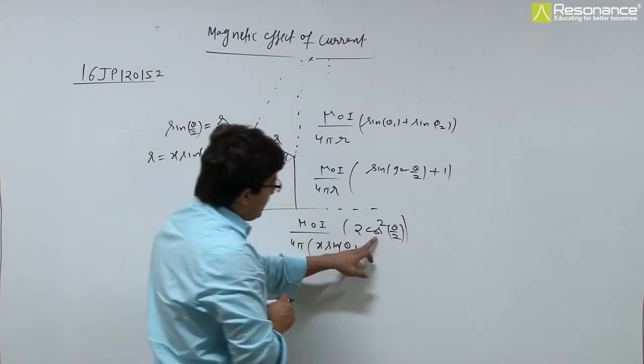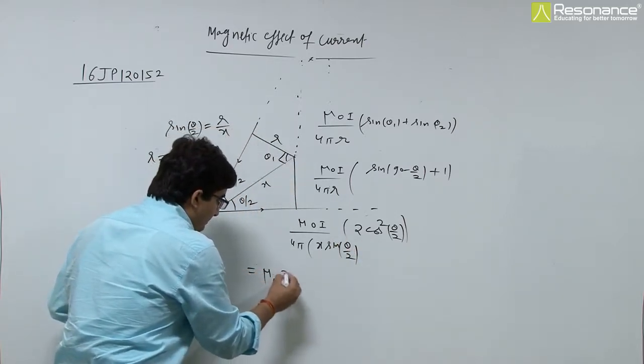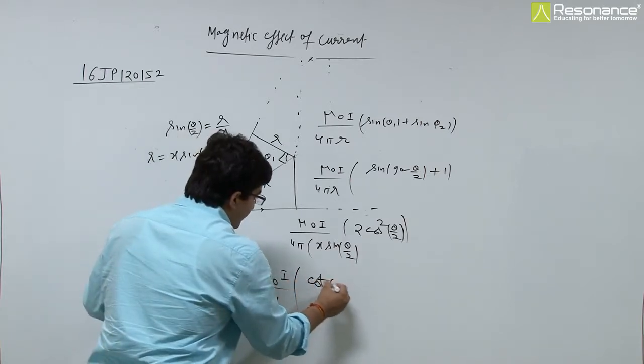Cos theta by 2 cancel, 2 cancel. So mu 0 i by 4 pi x into cot theta by 2.